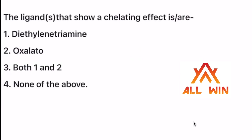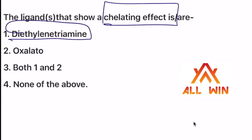How do you answer the question? The ligand that shows the chelating effect. The ligand that shows the chelating effect — oxygen. This is diethylene triamine. Where is the chelation? This is the chelating effect.